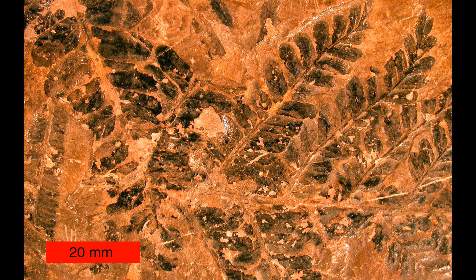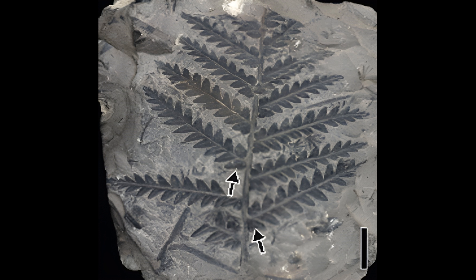A compression fossil is a fossil preserved in sedimentary rock that has undergone physical compression. While it is uncommon to find animals preserved as good compression fossils, it is very common to find plants preserved this way. The best fossils of leaves are found preserved in fine layers of sediment that have been compressed in a direction perpendicular to the plane of the deposited sediment.